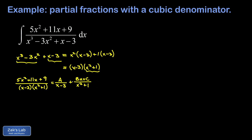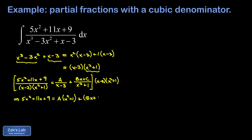The integrand will break down into these two simpler pieces, and we should be able to find quick antiderivatives of all pieces. We start by multiplying both sides by the least common denominator — the entire original denominator, (x minus 3)(x squared plus 1). This cancels all denominators, leaving 5x squared plus 11x plus 9 on the left, and on the right: A times (x squared plus 1) plus (Bx + C) times (x minus 3).